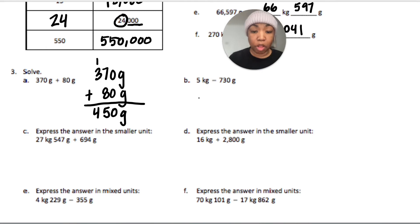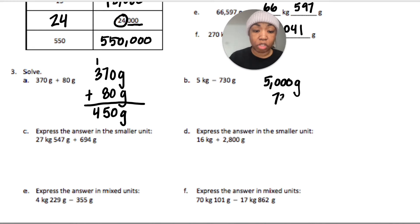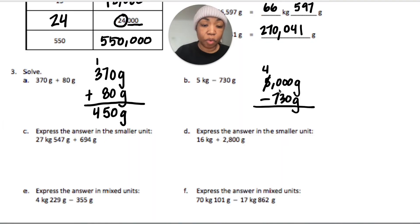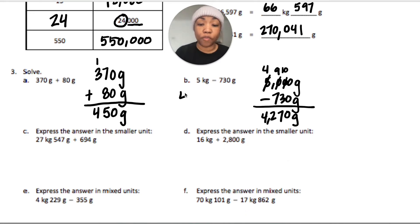For this next one I put the values in smaller units: 55 kilograms is five thousand grams, and I'm subtracting 730 grams from it. I take from the five — five becomes four — the zero becomes ten, then nine, then this zero becomes ten. I don't need to regroup further since zero minus zero is fine. Zero minus zero is zero, ten minus three is seven, nine minus seven is two, giving four thousand two hundred seventy grams, or four kilograms 270 grams.